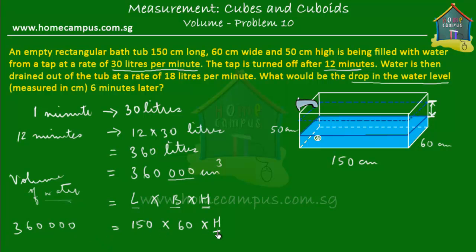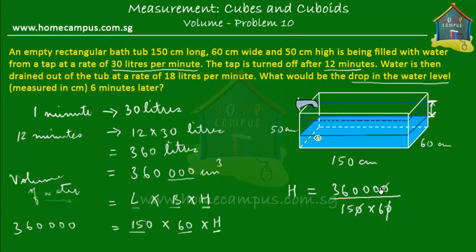We know all this equals 360,000 cubic centimeters. To find the height, we divide the volume — 360,000 cubic centimeters — by the base area, which is 150 times 60. Simplifying: 6 divided by 6 is 1, and 3,600 divided by 6 is 600. Then 600 divided by 15 gives 40. So the height of the water level at first was 40 centimeters — the top level marked by the dotted blue line is 40 centimeters.